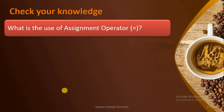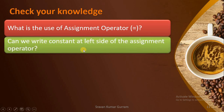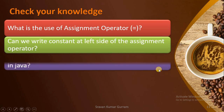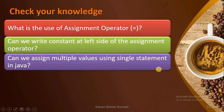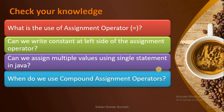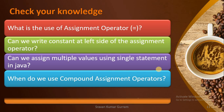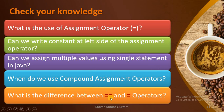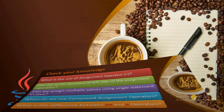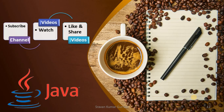Check your knowledge from this video: What is the use of assignment operator? Can we write a constant at the left-hand side of the assignment operator? Can we assign multiple values using a single statement in Java? When do we use compound assignment operators? What is the difference between the equals-to operator and the assignment operator? If this video is useful to you, please subscribe to the channel, like, and share it. Thank you.